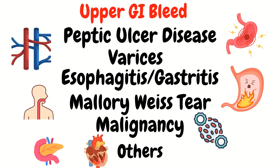Then there's esophagitis and gastritis, as well as Mallory-Weiss tears, which are tears in the lining of the lower esophagus as a result of forceful coughing and vomiting. Going down the list, there are also malignancies — and as we know, they can be very vascular and they can bleed. Then there are other conditions where arteries and veins become exposed within the GI tract, causing bleeding. There are also aortoenteric fistulas that can form after repairing abdominal aortic aneurysms. And don't forget that chronic alcohol use is associated with liver issues, gastritis, and other GI issues.